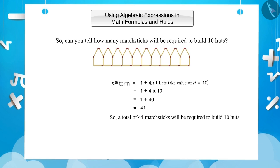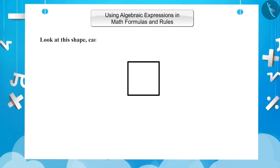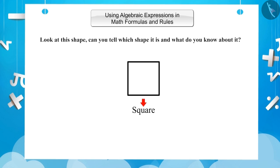Let us now learn about the use of algebraic expressions in geometric figures. Children, look at this shape. Can you tell which shape it is and what you know about it? Yes, it's a square. We know that all the sides of a square are equal. Let us represent the side of this square with L, whose value here is 6 cm. Can you find its perimeter and area? Let's find it out together.